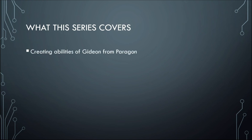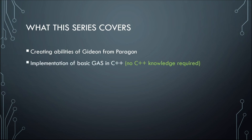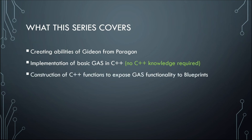What you can expect from this series is that we'll be creating some abilities from the Paragon character Gideon, and we'll implement some base C++ classes for using our gameplay system. You don't need to know C++ — you can simply copy and paste the code, don't be afraid of it. We'll construct some C++ functions and then expose that functionality to blueprints, so this is going to be blueprint-friendly once you have your C++ functions set up.